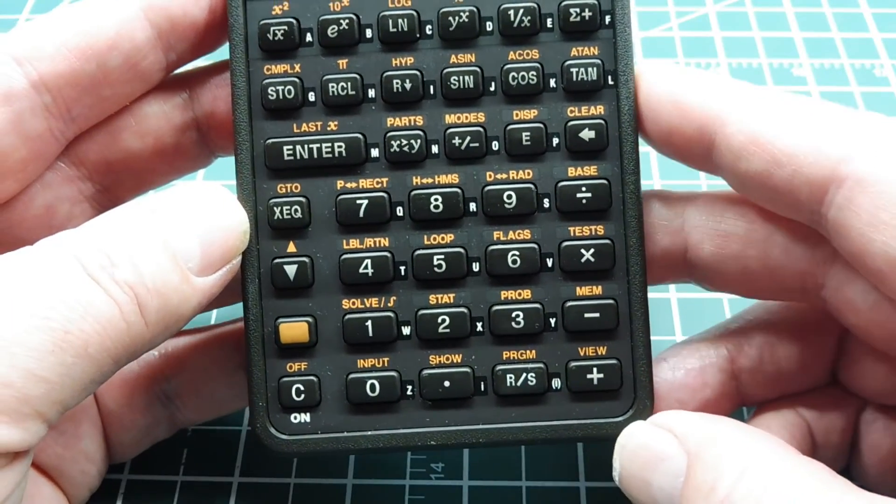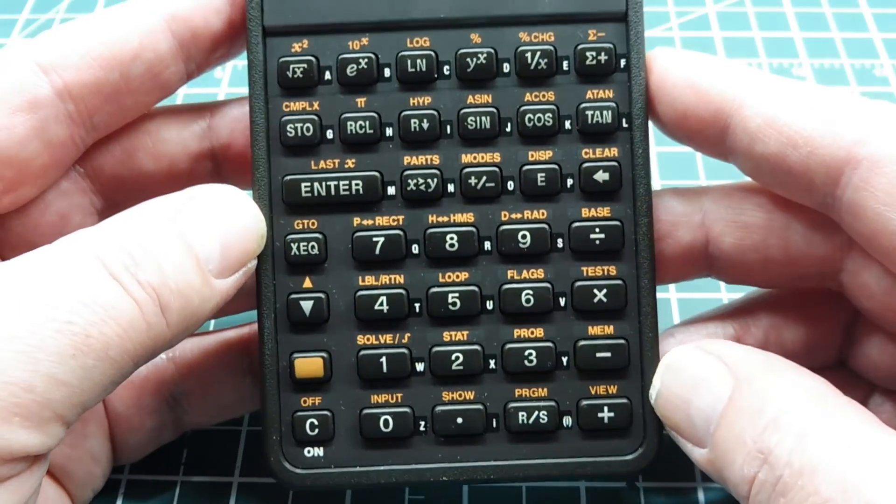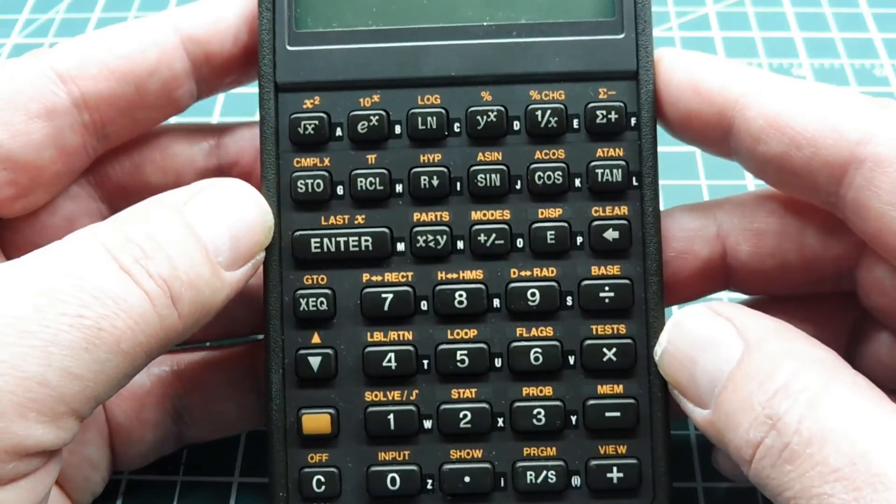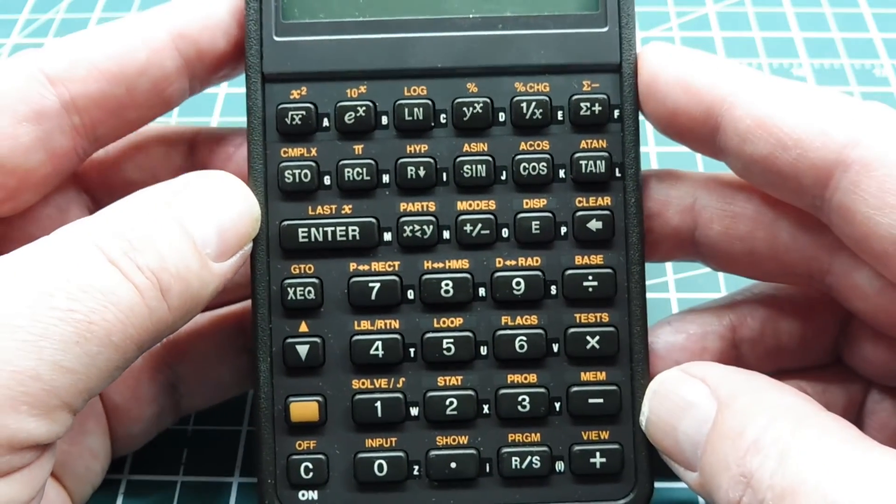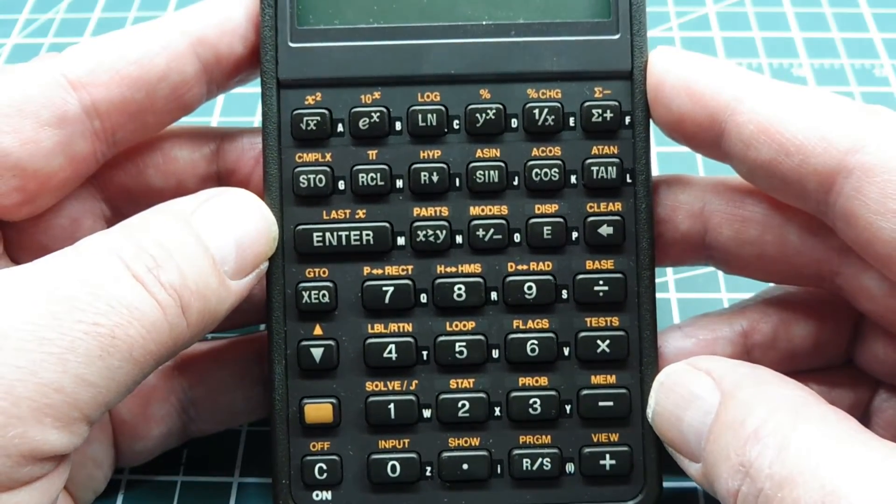Now if you notice on this calculator there's no equal sign because it uses RPN technique, and this same technique is used in the Forth programming language, so it makes math solving efficient and fast.